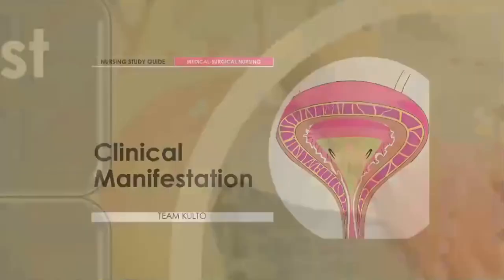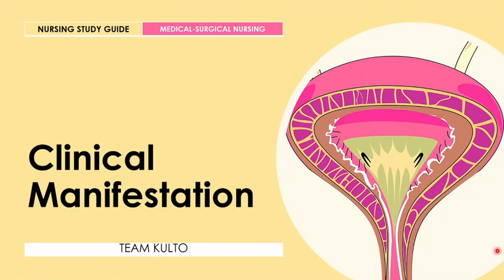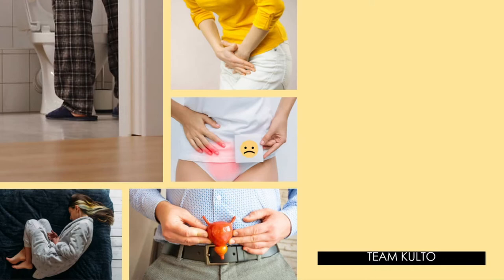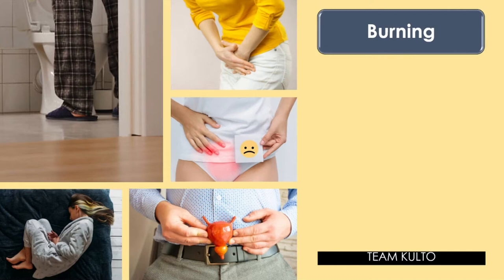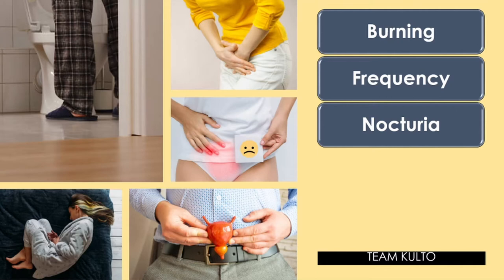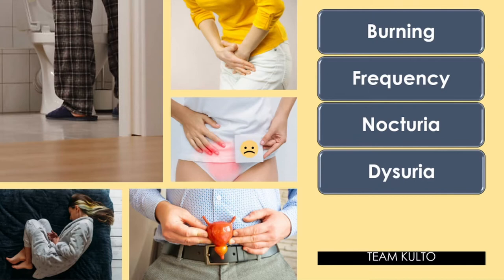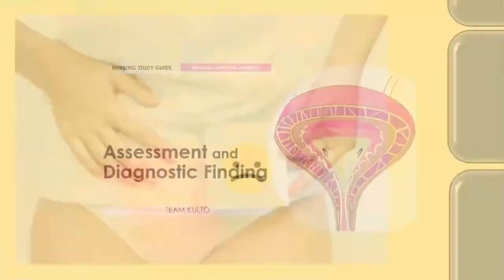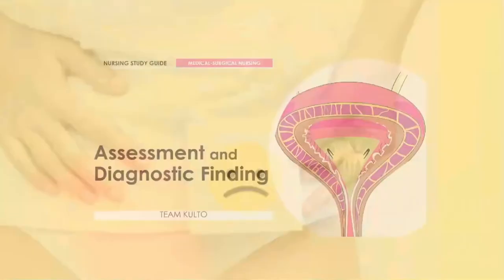Now for clinical manifestations — the signs and symptoms associated with cystitis. First, burning: a sensation of burning upon urination. Second, frequency: the patient experiences voiding more than every three hours. Third, nocturia: the patient experiences awakening at night to urinate. Fourth, dysuria: difficulty in urinating. Fifth, urethral discharge: the presence of discharge, especially in males.